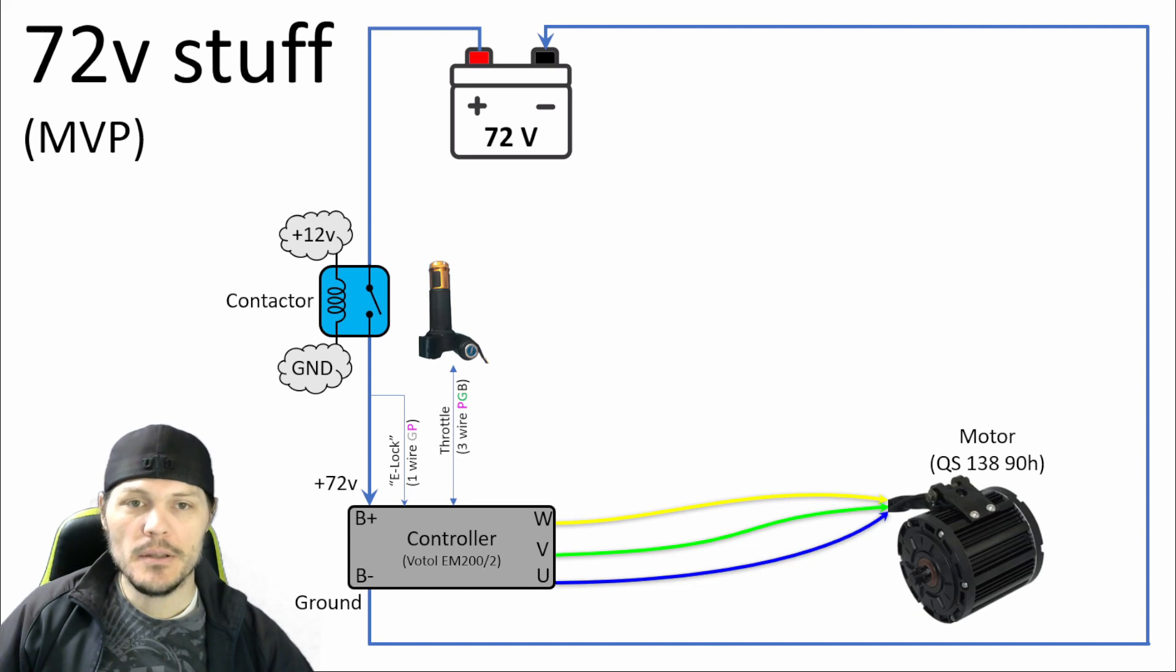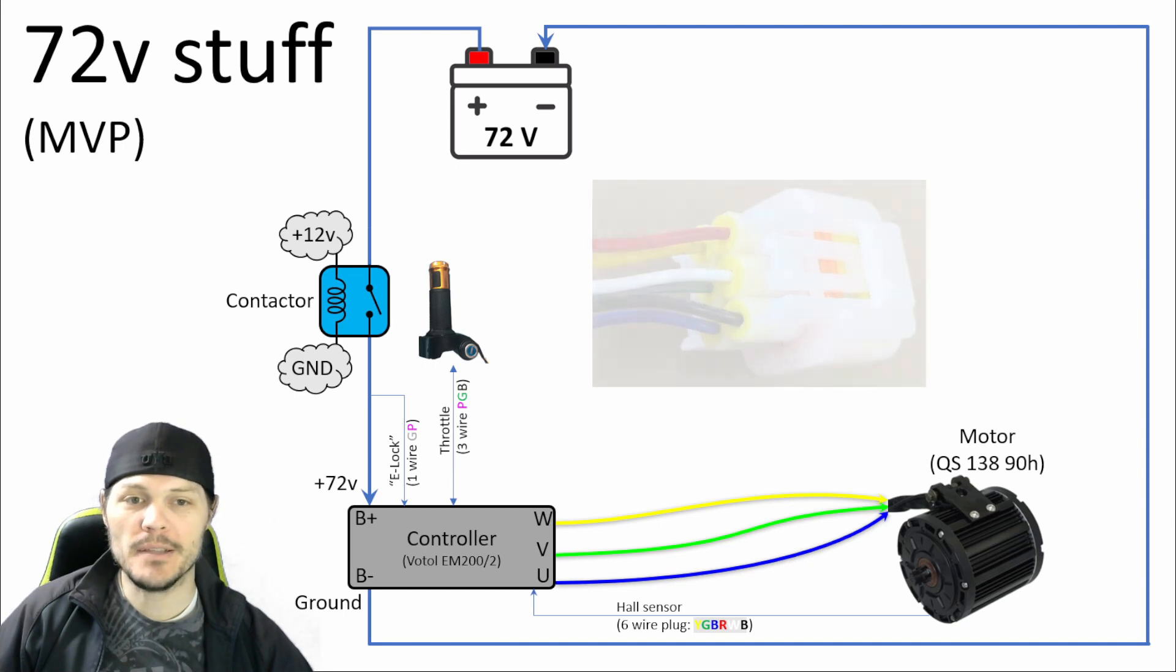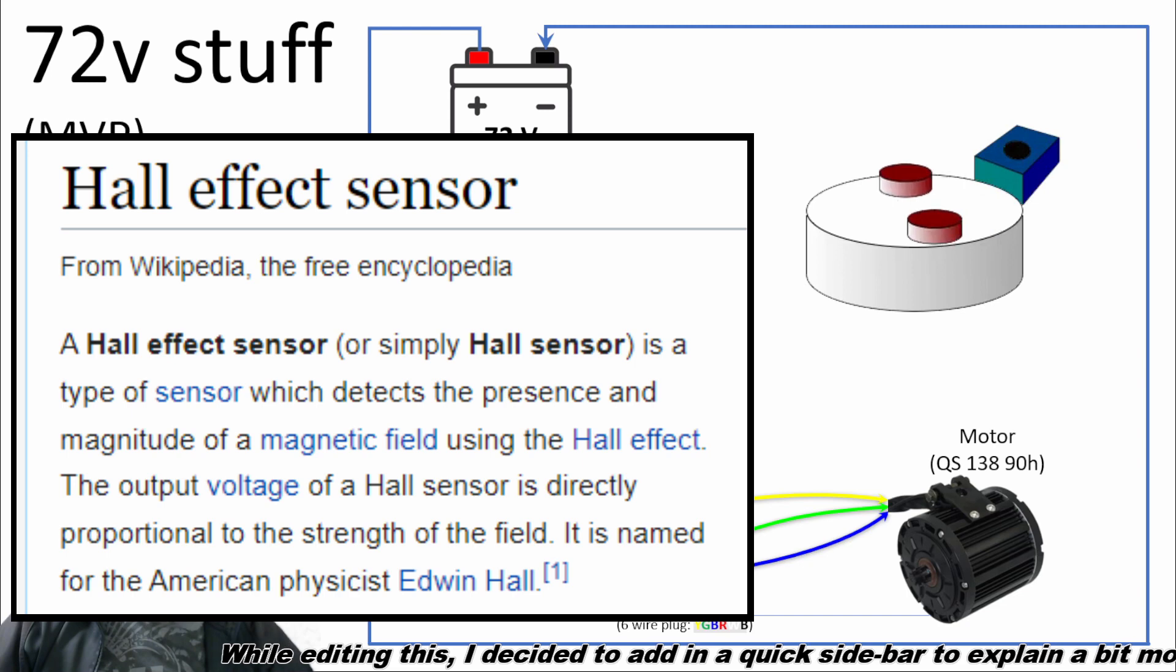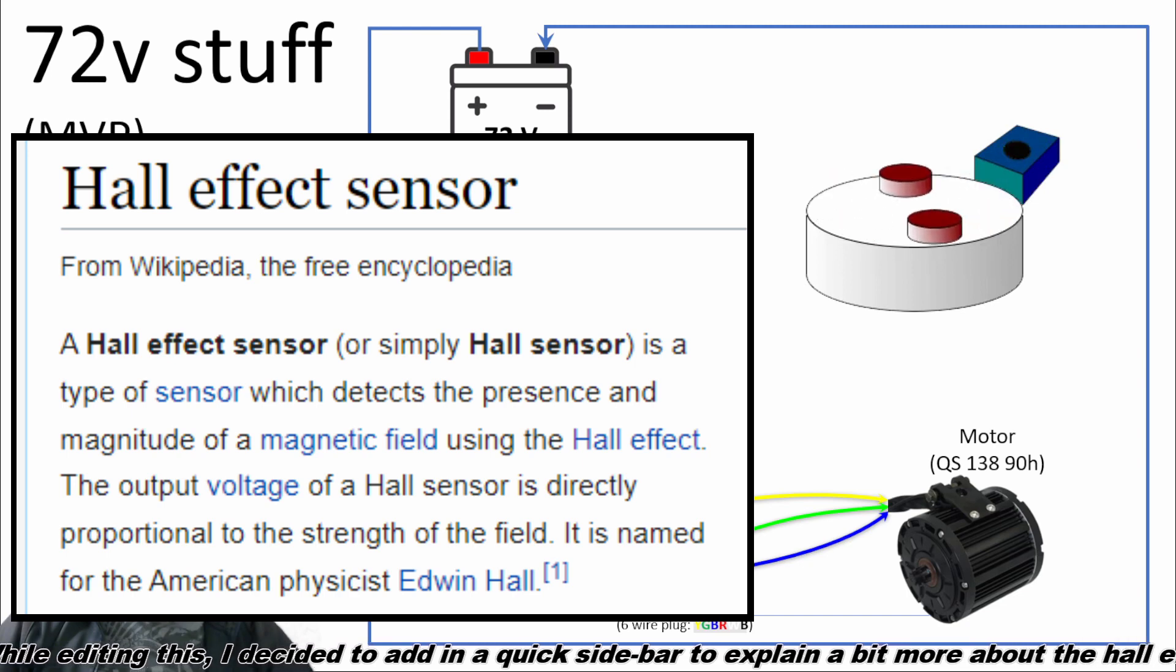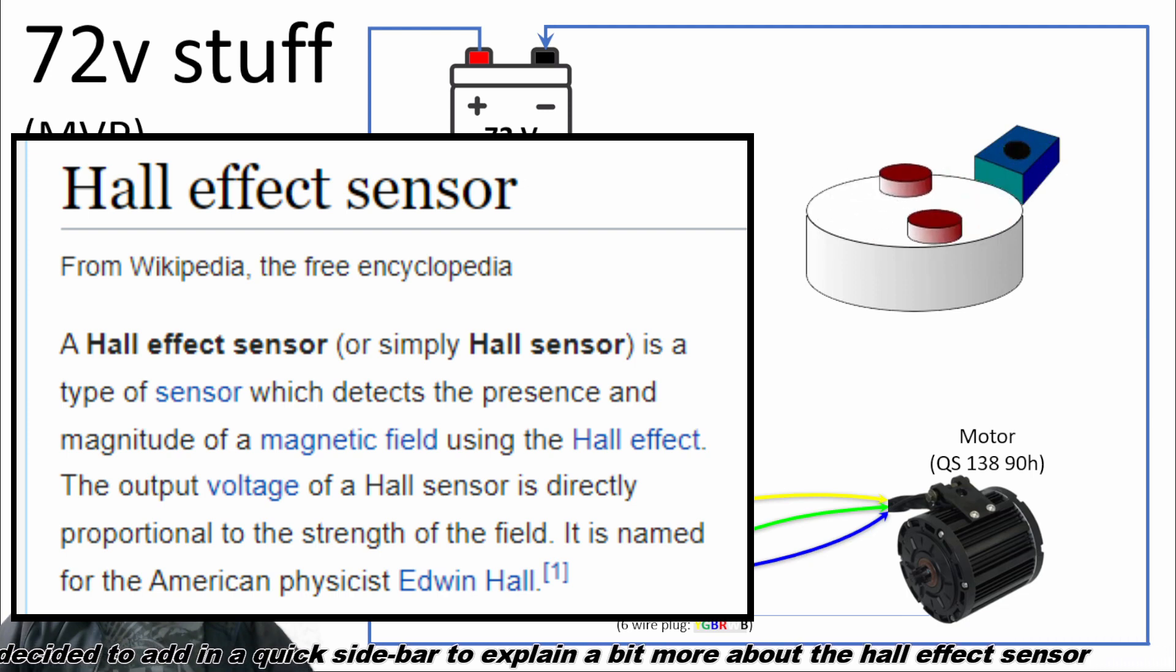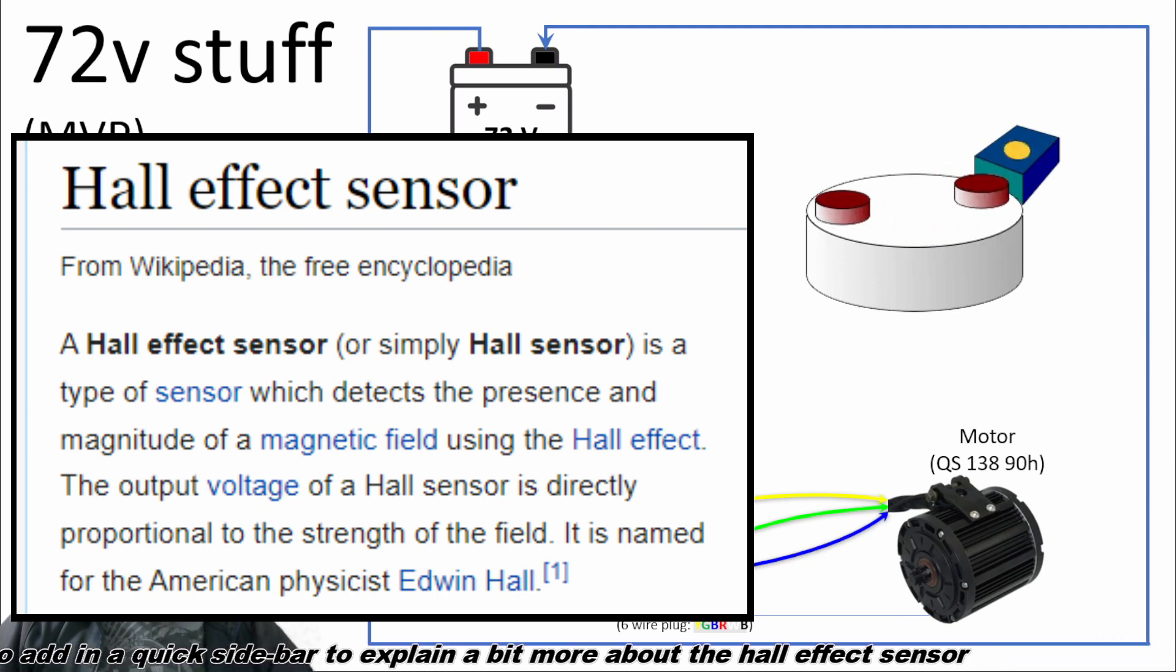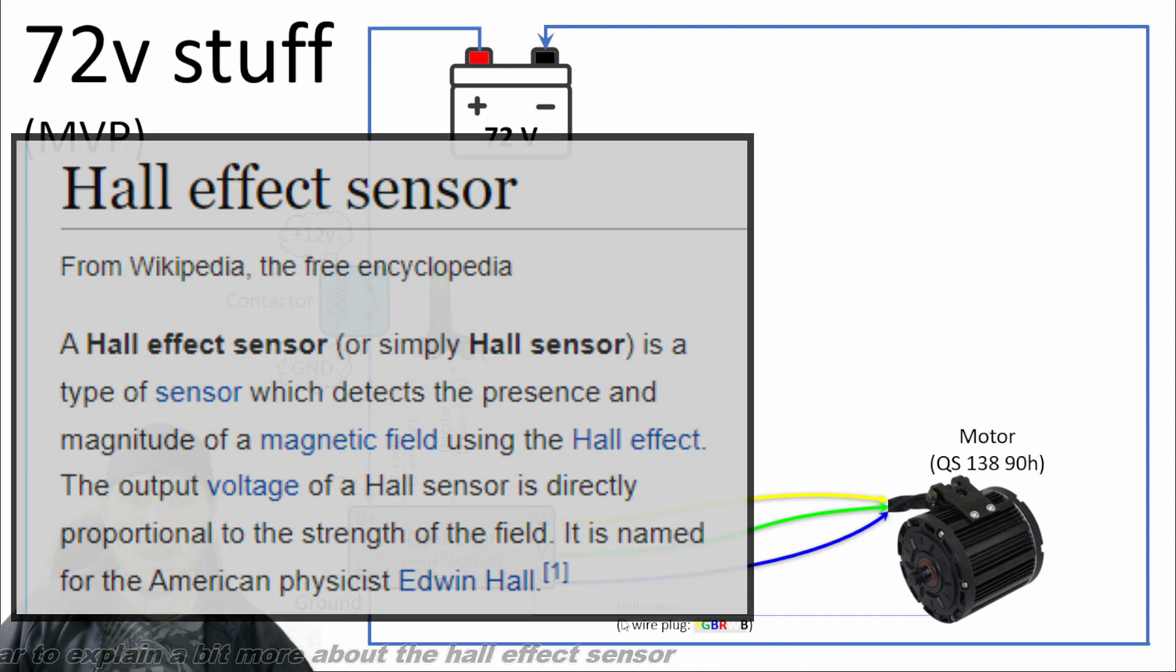Last but not least, there's another wire hanging off the motor that's actually a six wire plug that's yellow, green, blue, red, white, and black. And that six wire plug is the hall sensor, or hall effect sensor. A hall effect sensor is a magnetic sensor equipped on the rotor of the DC motor. The purpose of the hall effect sensor is to detect a magnetic field and send a signal to the controller about the position of the motor. The motor controller uses this signal to decide how to adjust the power to the motor.